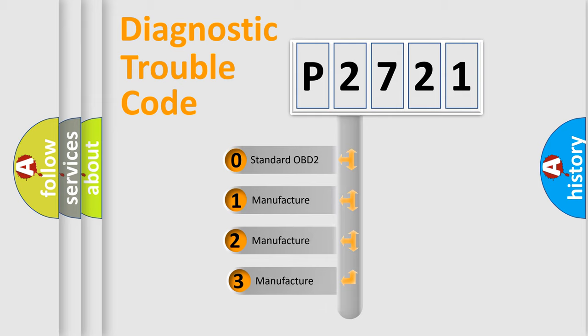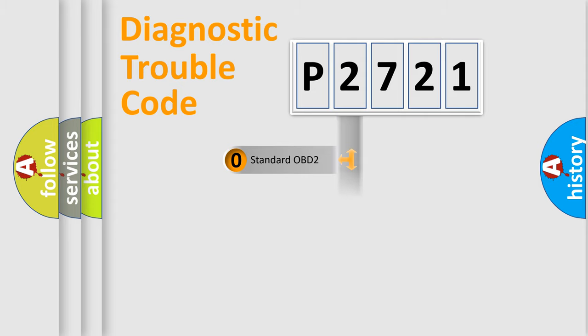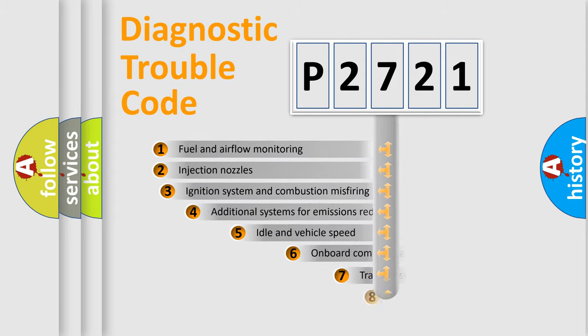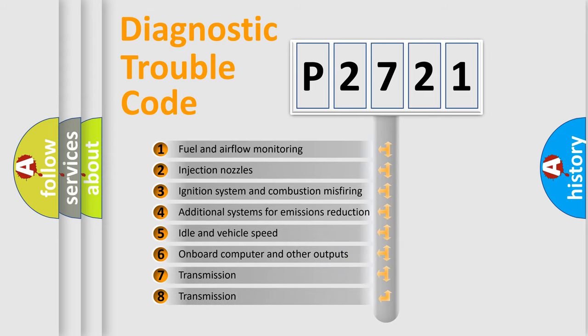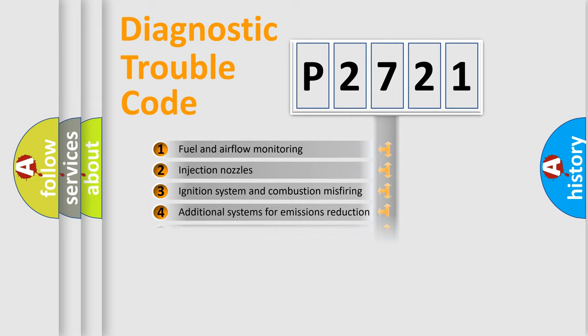If the second character is expressed as zero, it is a standardized error. In the case of numbers 1, 2, or 3, it is a more prestigious expression of the car-specific error. The third character specifies a subset of errors. The distribution shown is valid only for the standardized DTC code.